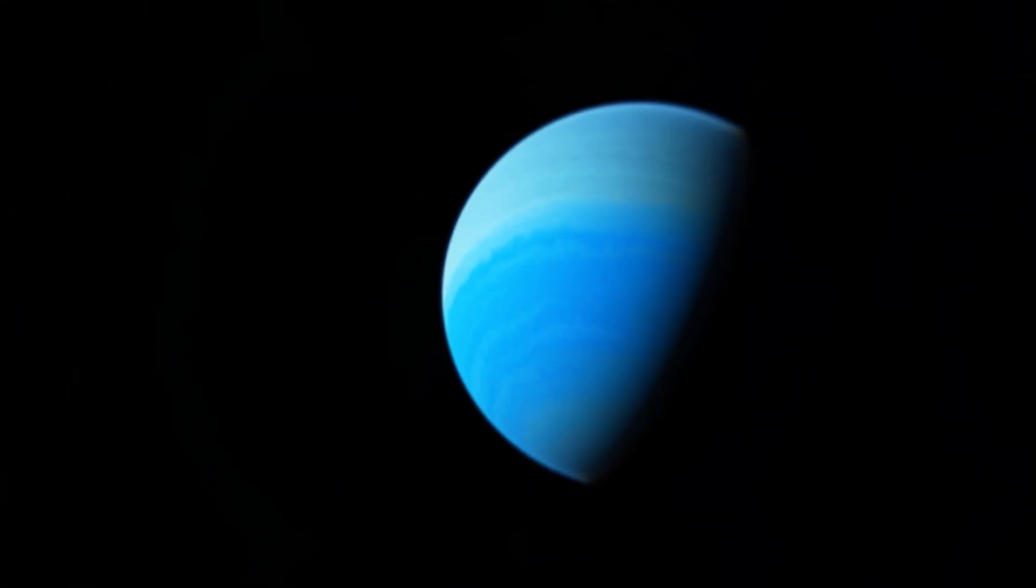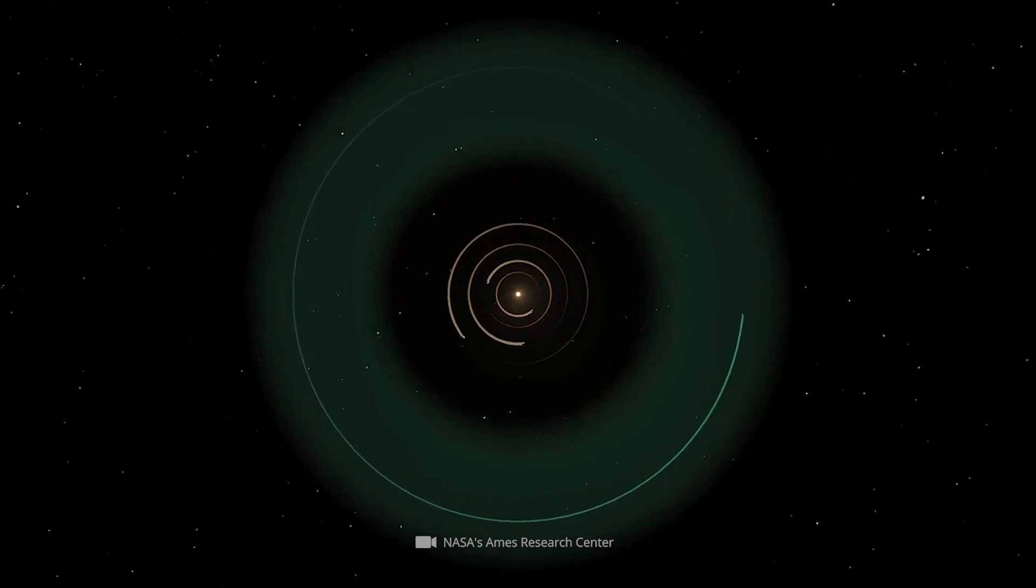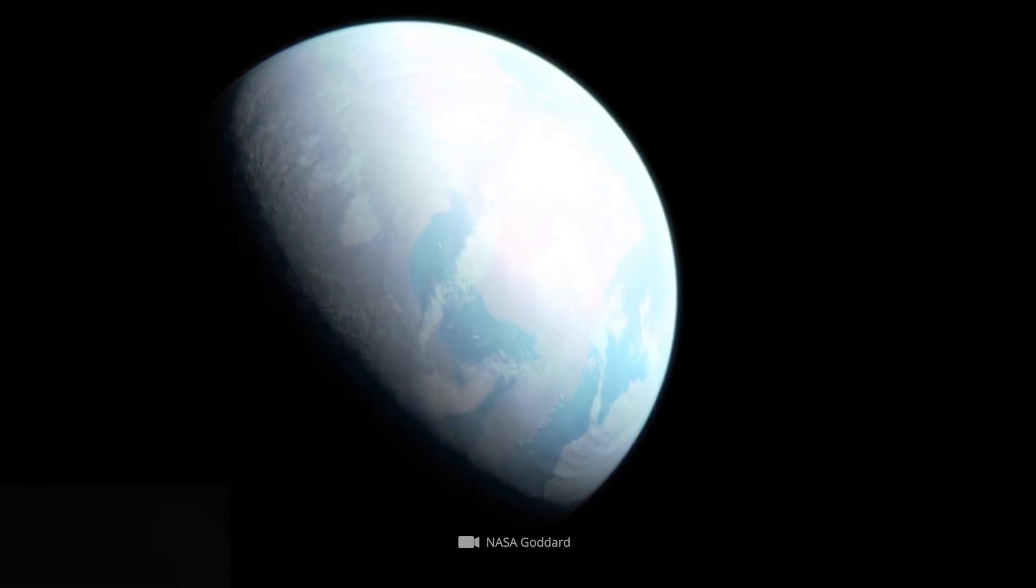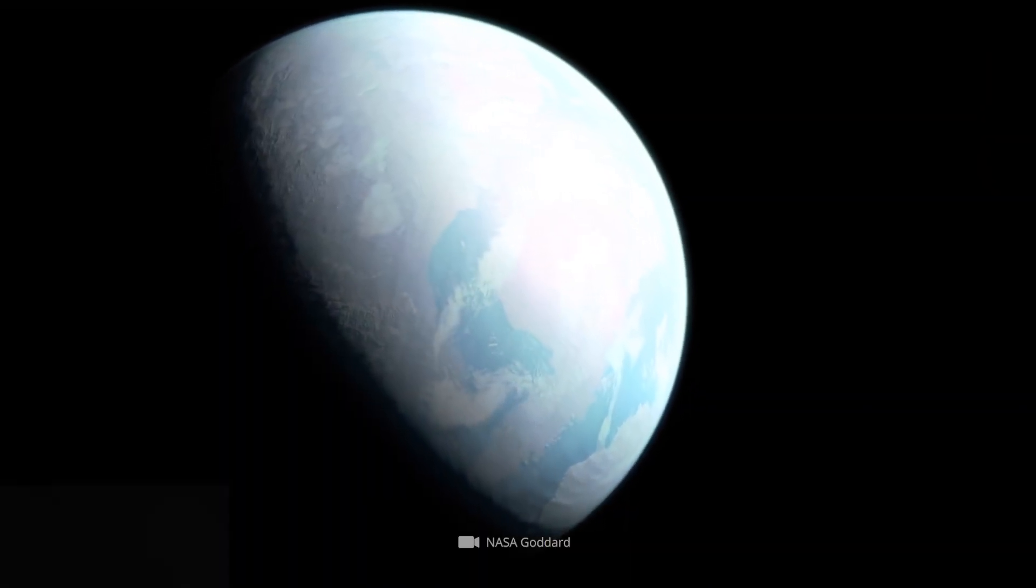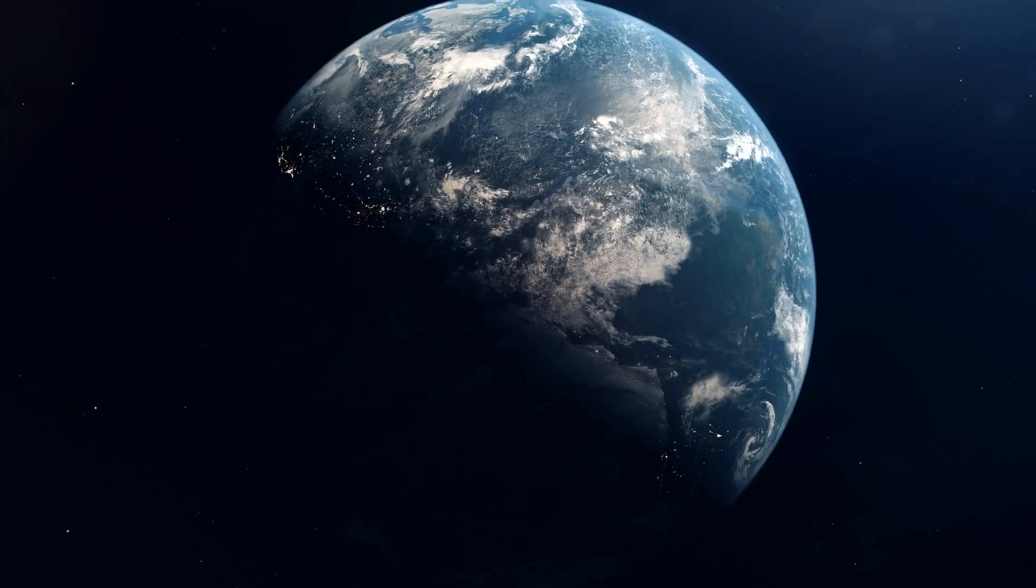Experts have succeeded in detecting around 5,000 exoplanets in more than 3,700 different systems. Unfortunately, however, the experts have not yet been able to identify a habitable celestial body or even a cosmic image of the Earth.